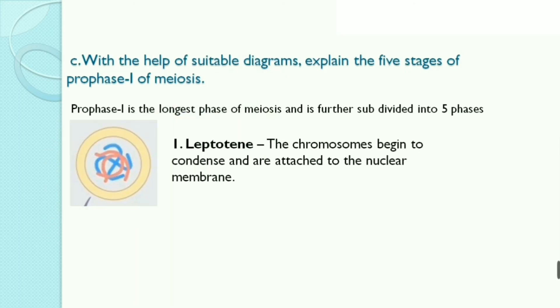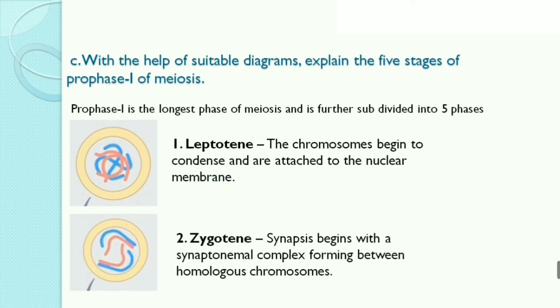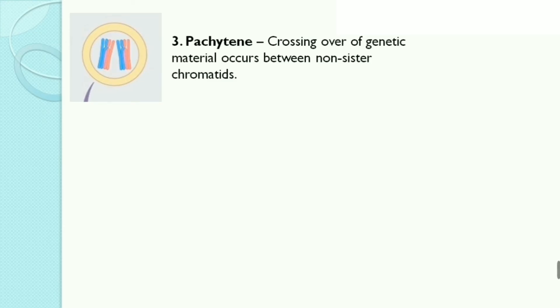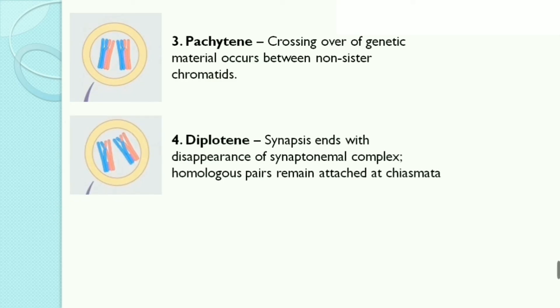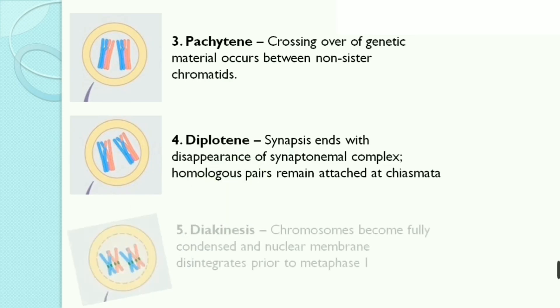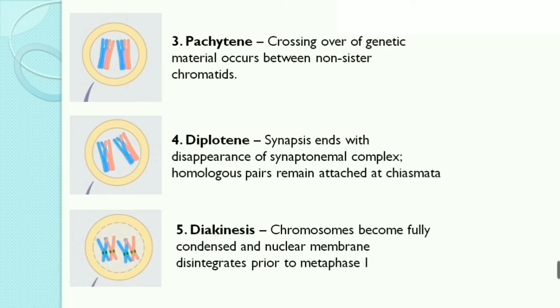First, leptotene: the chromosomes begin to condense and are attached to the nuclear membrane. Second, zygotene: synapsis begins with a synaptonemal complex forming between homologous chromosomes. Third, pachytene: crossing over of genetic material occurs between non-sister chromatids. Fourth, diplotene: synapsis ends with disappearance of the synaptonemal complex; homologous pairs remain attached at chiasmata. Fifth, diakinesis: chromosomes become fully condensed and the nuclear membrane disintegrates prior to metaphase 1.